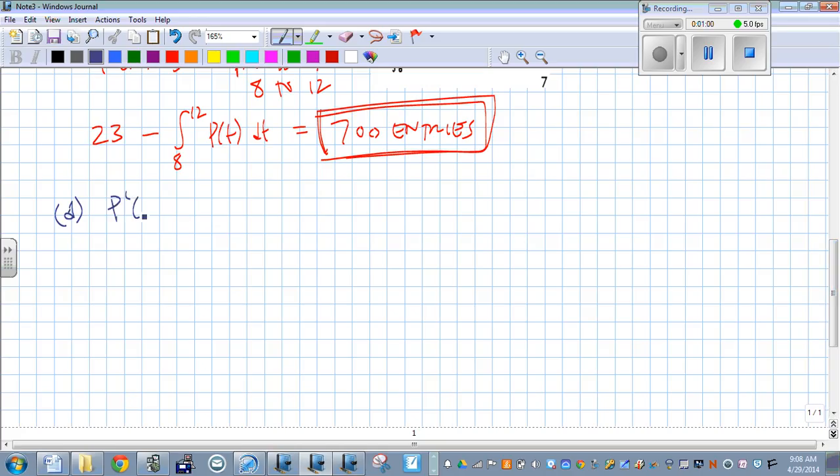Well, derivative of P of T, we want to figure out when that's equal to zero. Now, this is an easy one. We could look at the derivative of P of T and figure it out by hand. So we'd have 3T squared minus 60T plus 298.